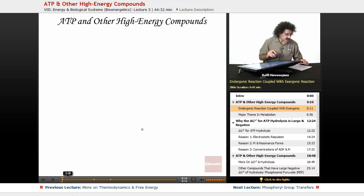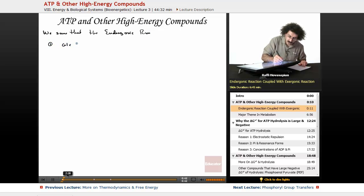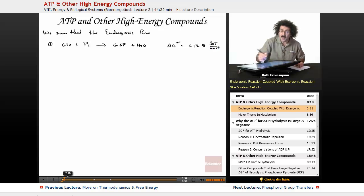Now we saw previously that an endergonic reaction can actually be coupled with an exergonic reaction to run the endergonic reaction under circumstances where it wouldn't otherwise go. So let's start with that. We saw that the endergonic reaction, let's call it number one, glucose plus inorganic phosphate goes to glucose 6-phosphate plus H2O. So the delta G for this one was positive 13.8 kilojoules per mole.